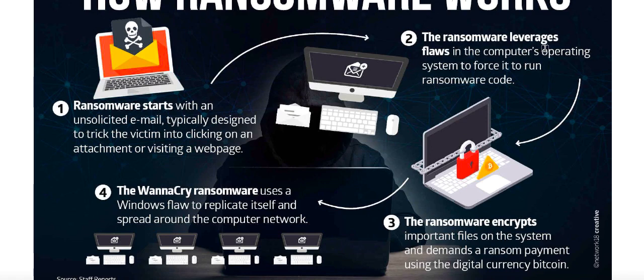The ransomware leverages flaws in a computer's operating system to force it to run ransomware code. As soon as you click on those particular URLs, programs start executing in the background without the permission of the operating system — they find loopholes or backdoors present in your OS. Once this code starts executing, ransomware encrypts the most important files present on your system.